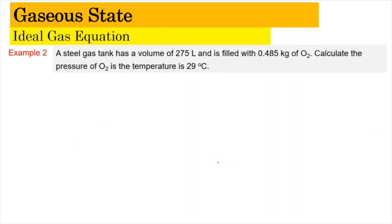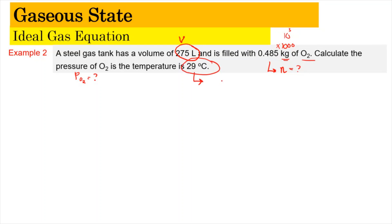Now we look at example number 2. A steel gas tank has a volume of 275 litres and is filled with 0.45 kg of oxygen gas. We can use the mass to find the number of moles, but be careful — you need to convert kilograms to grams by multiplying by 1000. We need to find the pressure of the oxygen gas if the temperature is 29 degrees Celsius, which we convert to Kelvin by adding 273.15. As usual, we use the ideal gas equation PV = nRT.